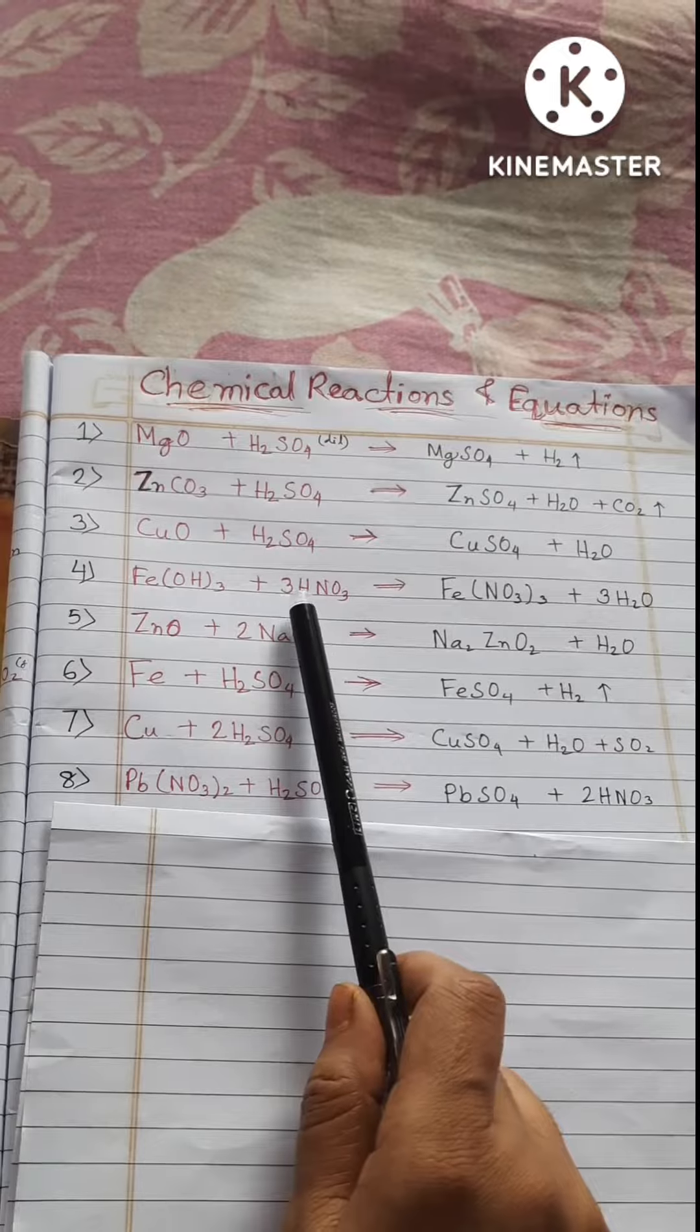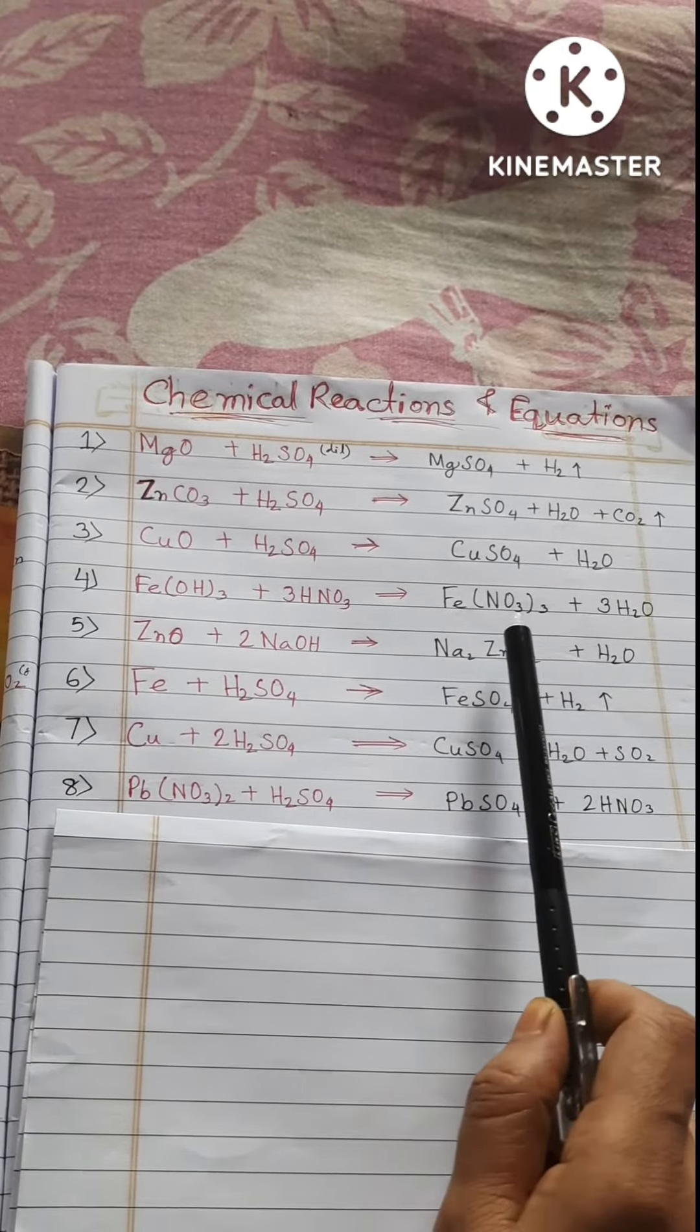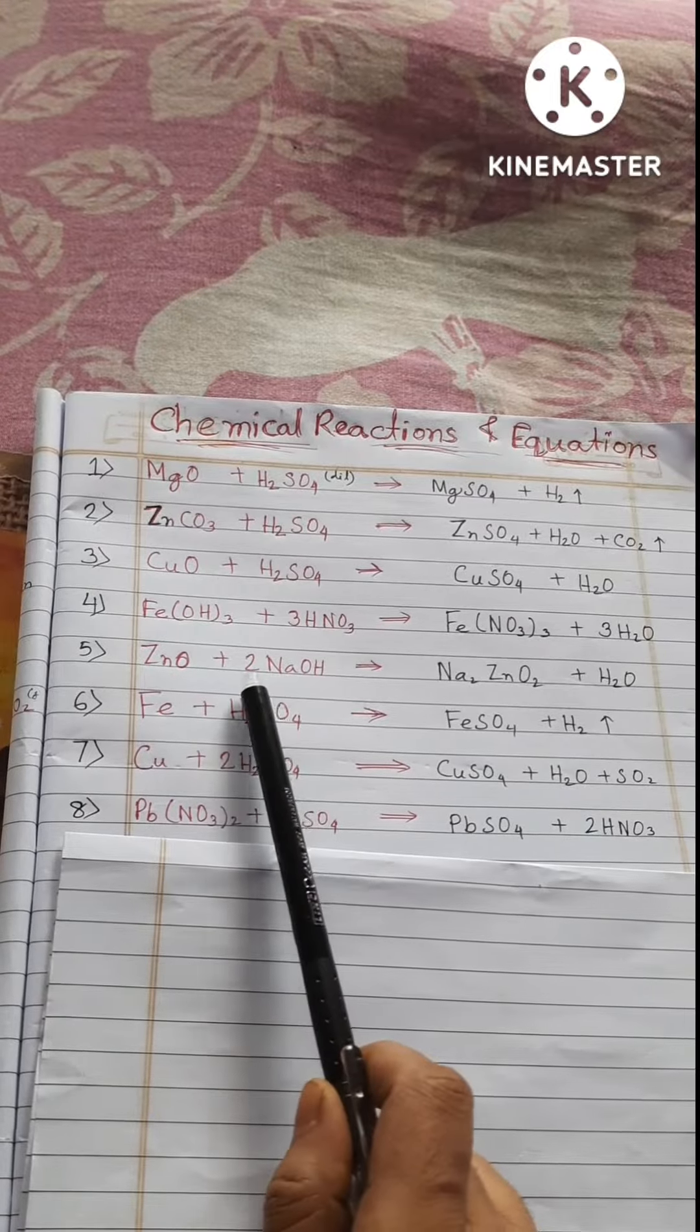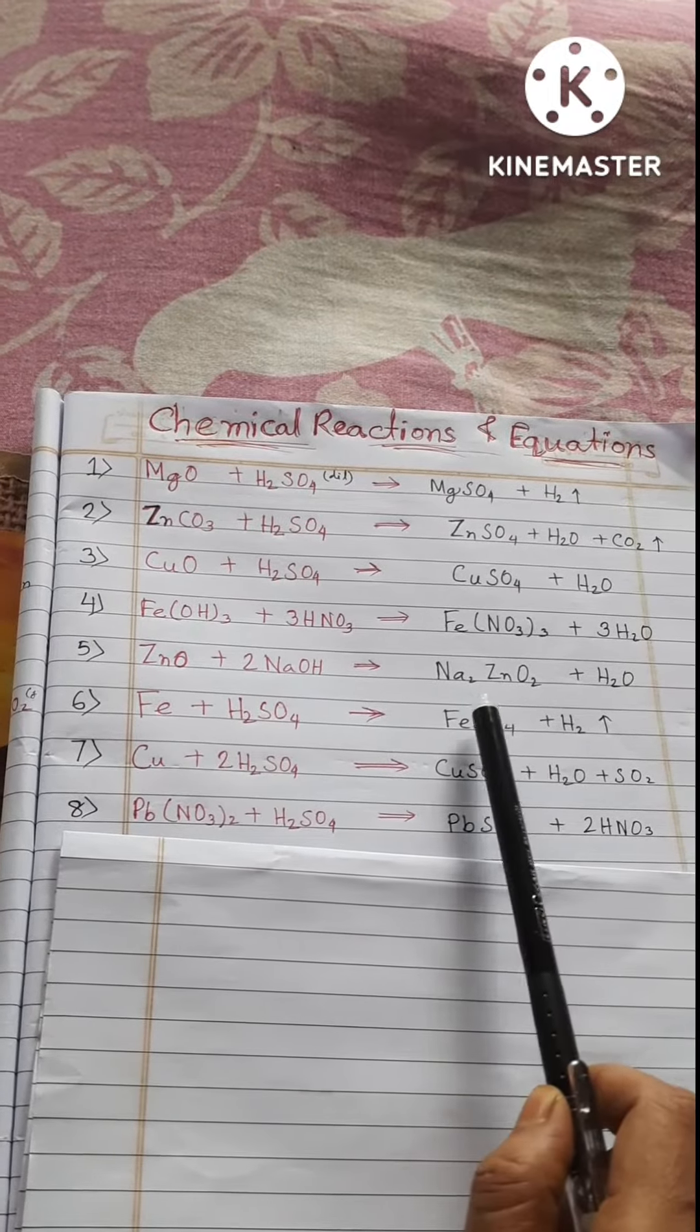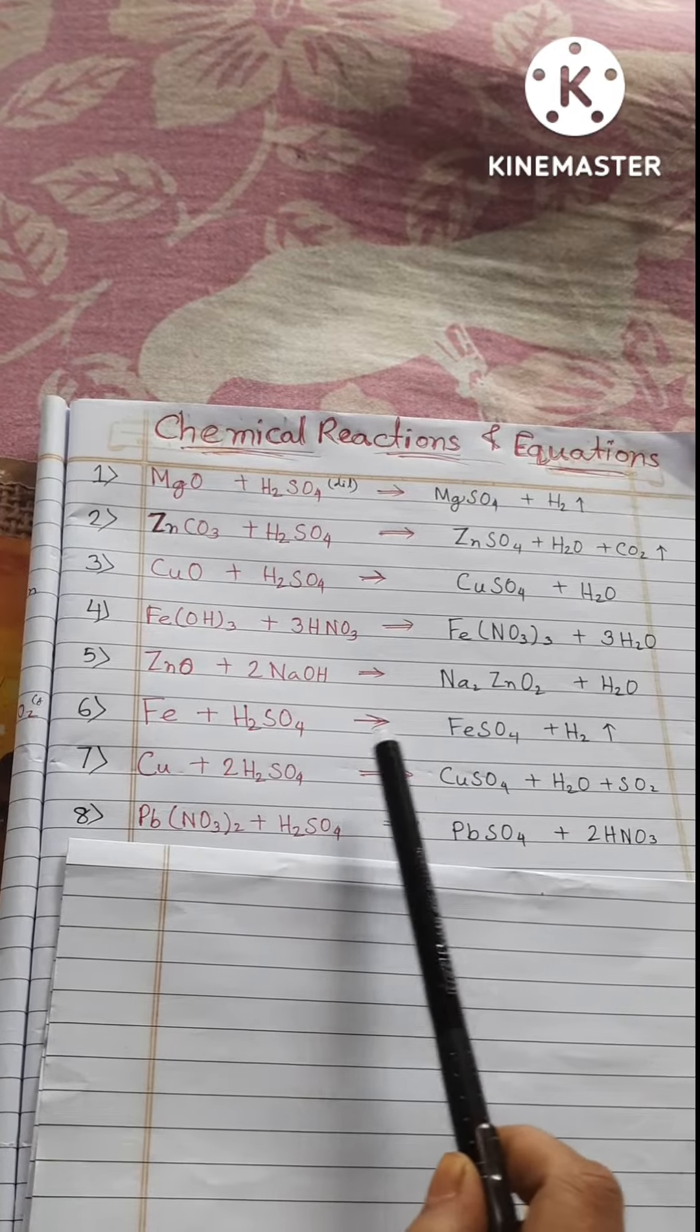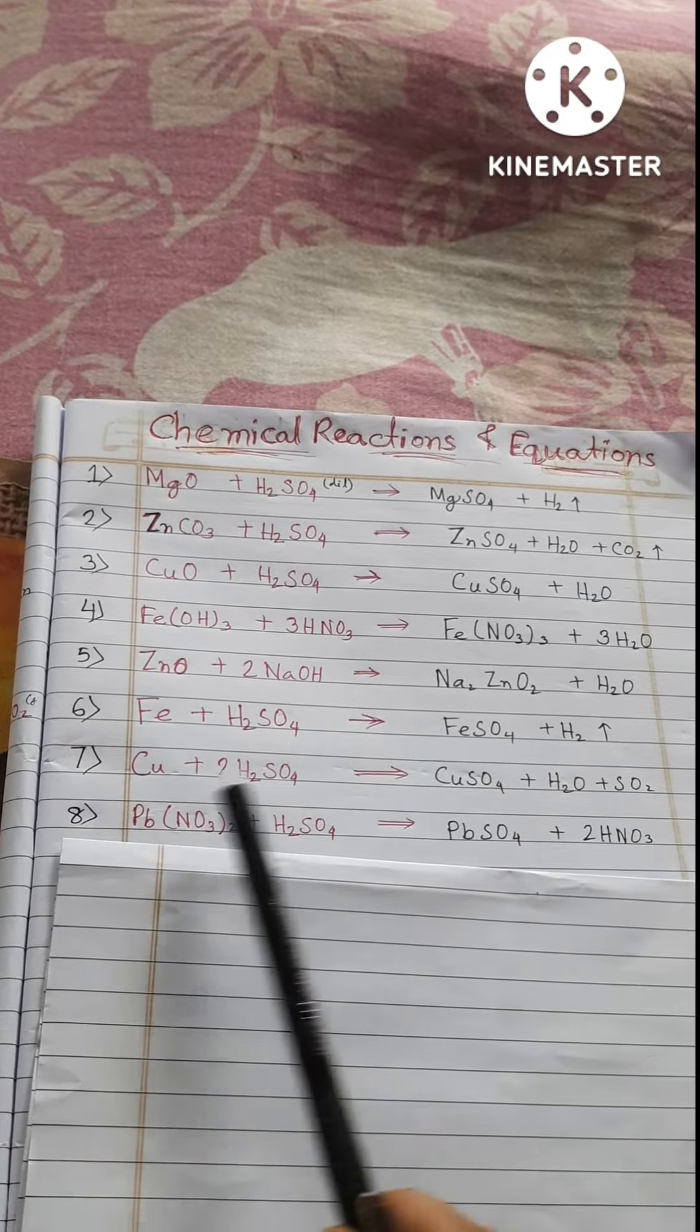Fe(OH)3 plus 3HNO3 equals Fe(NO3)3 plus 3H2O. ZnO plus 2NaOH equals Na2ZnO2 plus H2O. Fe plus H2SO4 equals FeSO4 plus H2.